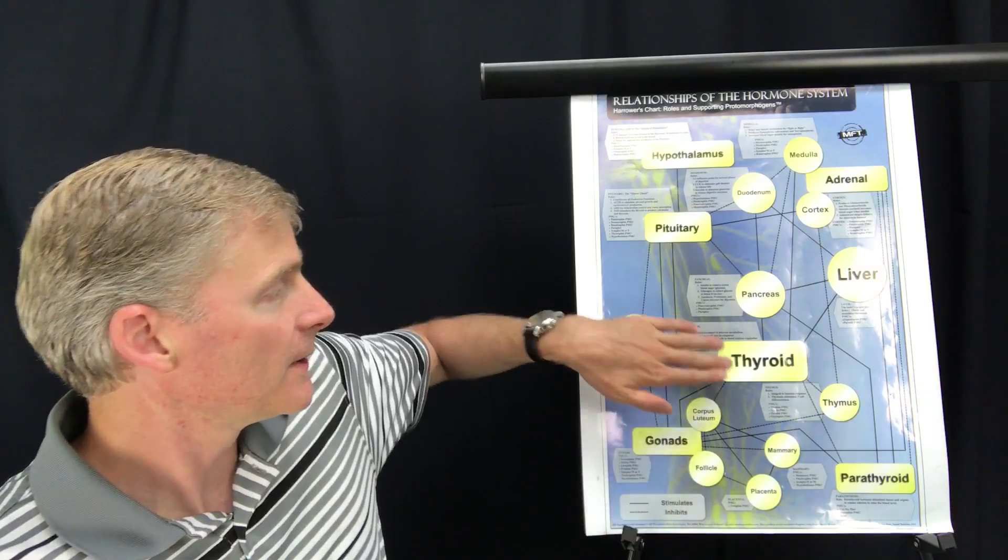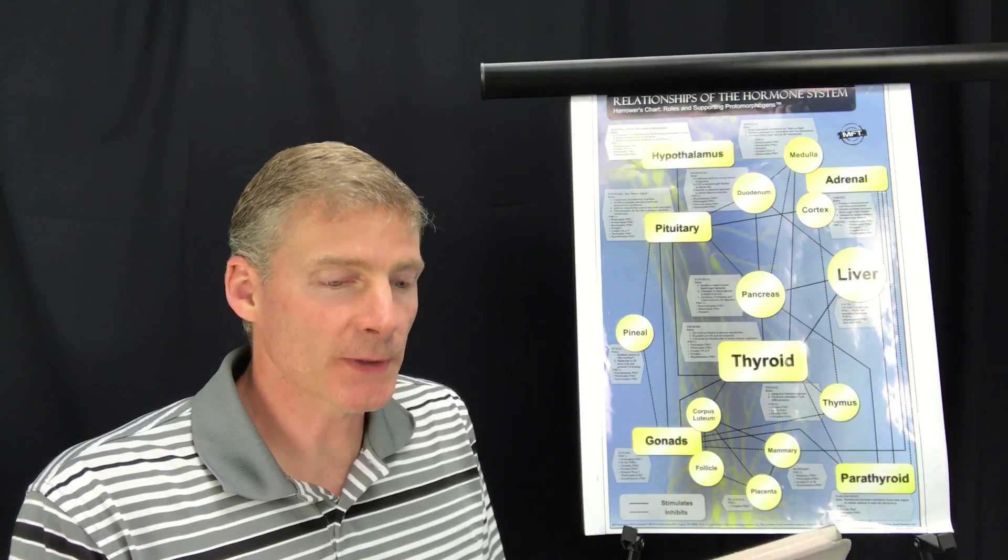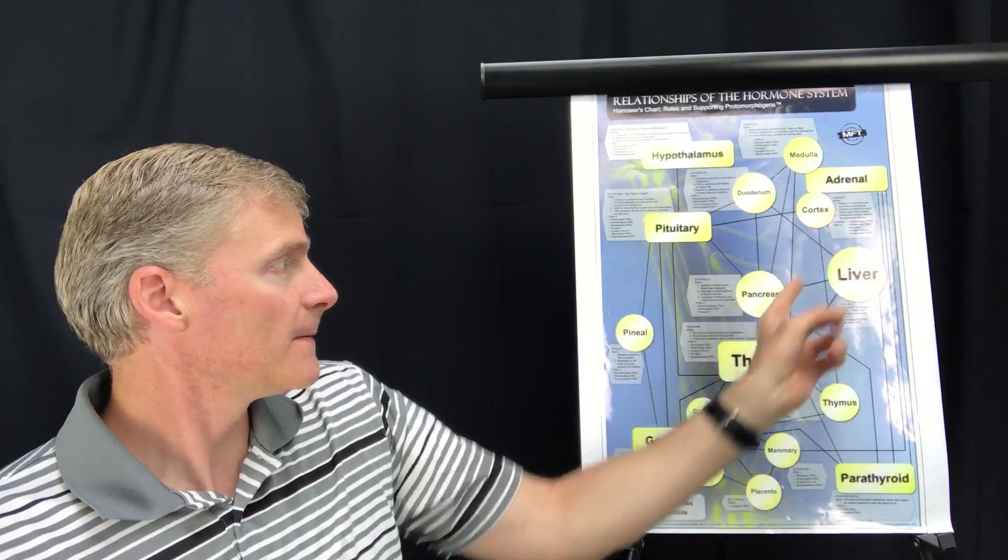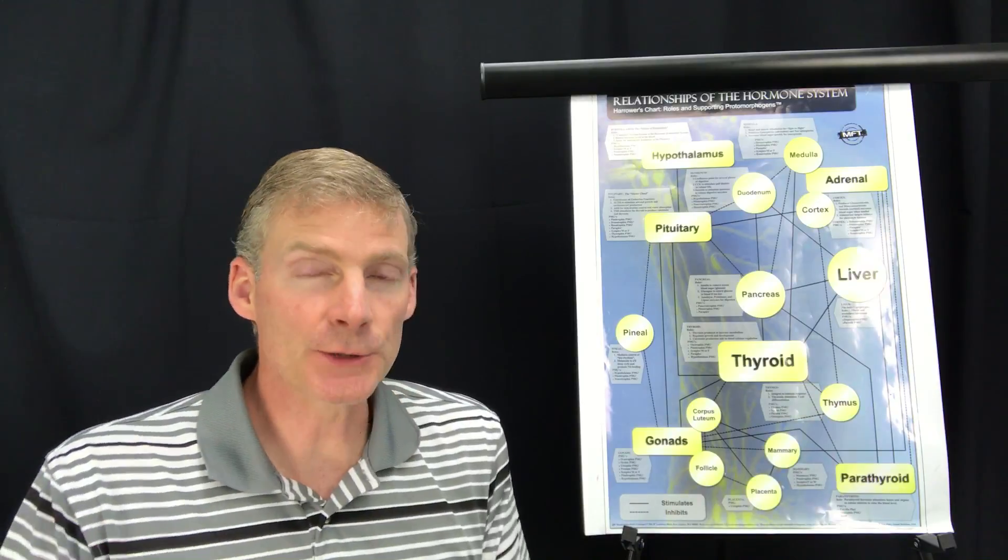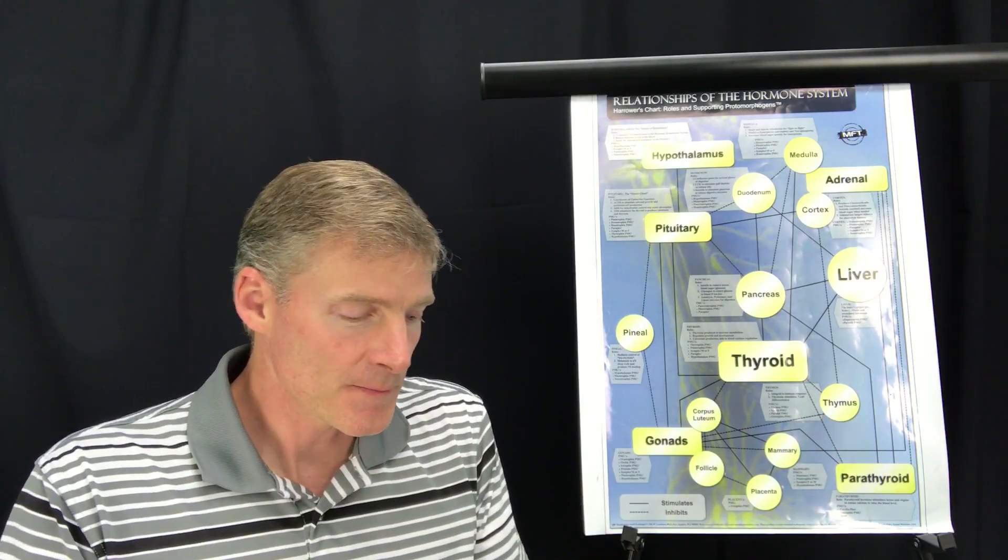And next, the adrenals, the pancreas, and the thymus. So here's the adrenals, the pancreas, and the thymus. So he grouped together these glands as they function together.